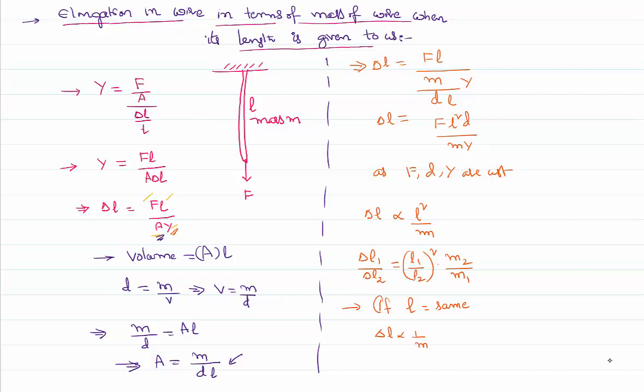So if two wires of similar length but of different mass are suspended and if the same force is applied, the extension is inversely proportional to mass. Now heavy mass expands less and vice versa. This is how we have to understand and solve the problem.